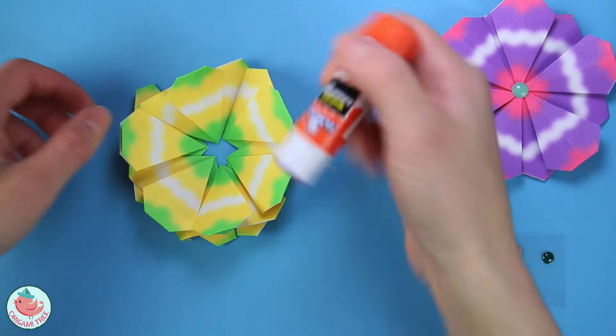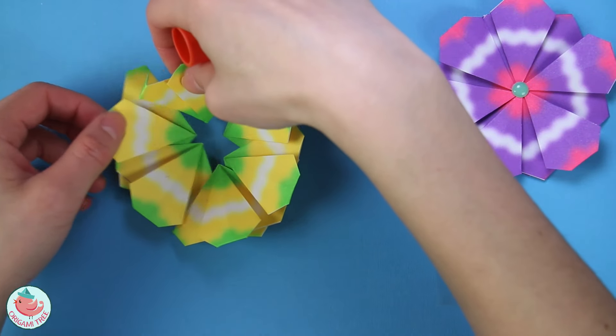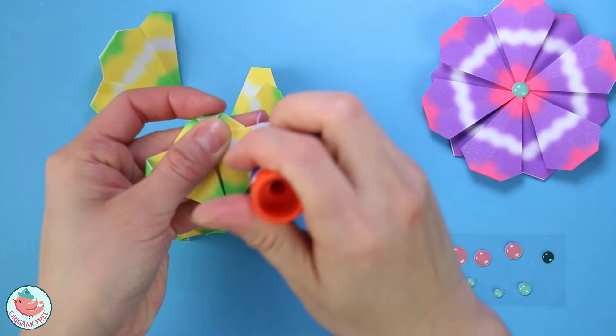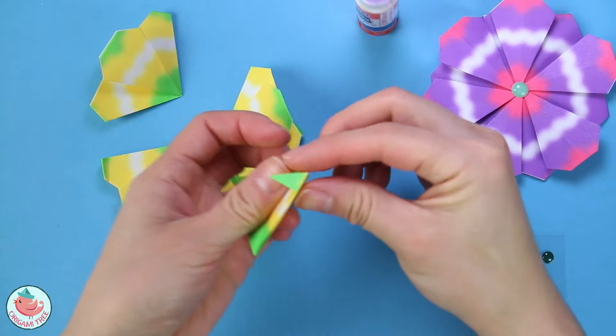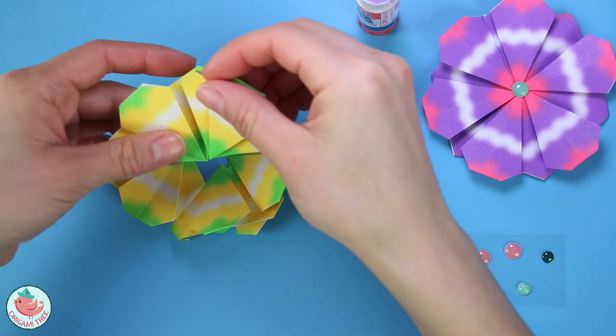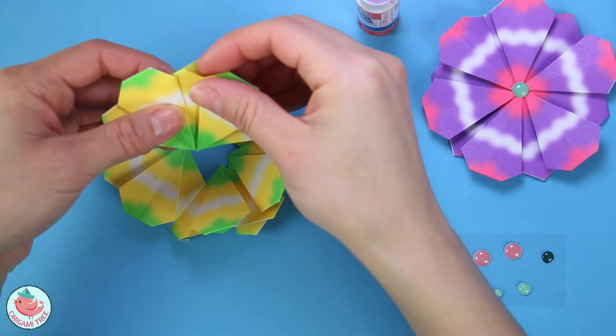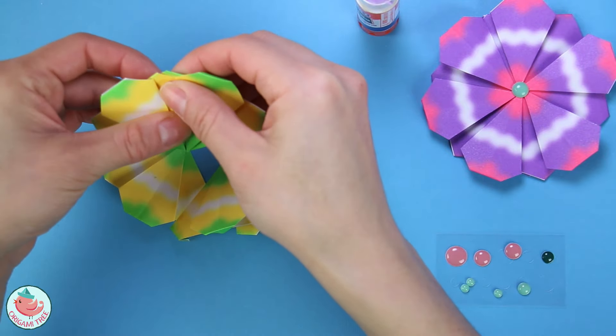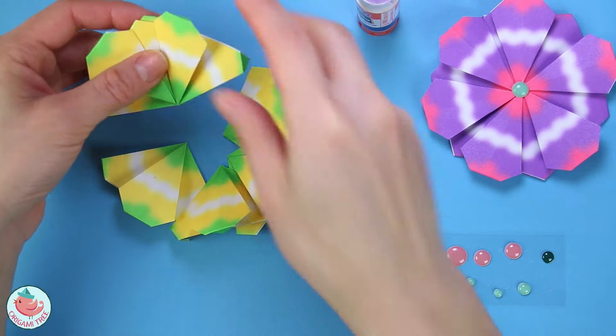So I'm going to start with these two right over here. Just take one, flip it around, put some glue on the back of one, and then just glue it onto the previous petal, so the one on the left. And then go around and repeat the same thing with the remaining petals.